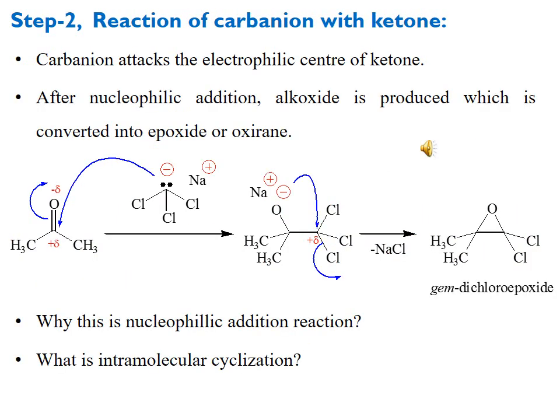Step two: the carbanion produced in step one reacts with the ketone. The carbanion acts as a nucleophile and attacks the electrophilic carbonyl carbon of the ketone in a nucleophilic addition reaction, producing an alkoxide ion. This alkoxide ion then undergoes intramolecular cyclization, attacking the carbon bearing three chlorines, with one chlorine removed as a leaving group to give an epoxide (oxirane).